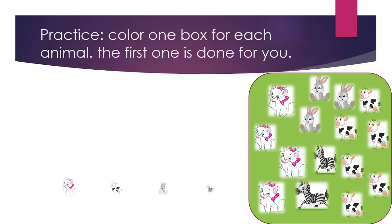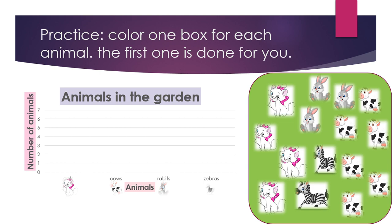Practice — just training, just exercise. Color one box for each animal. The first one is done for you. Color one box for each animal, and for every animal color one box on the graph. The animals we have are: cat, cow, rabbit, and zebra. The graph has the vertical axis: number of animals. Horizontal axis: types of animals. The title of the graph: animals in the garden.